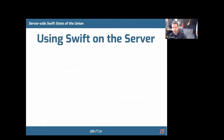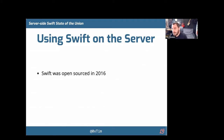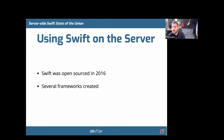So, Swift on the server — how did we get here? Swift was open-sourced in 2016, which was the main requirement for it to run on the server, because when it was open-sourced it was available for Linux. As soon as it was available for Linux, people could start using it for server applications. Not many people are going to run Swift on the server on macOS because of deployment issues — it's too expensive and too hard. So Linux is where it is, and in 2016 Swift Package Manager came out. It's only been six years, which is quite a short time compared to more established frameworks in other languages.